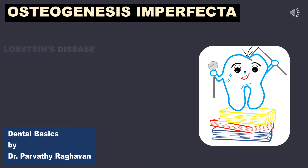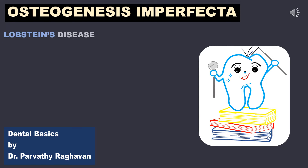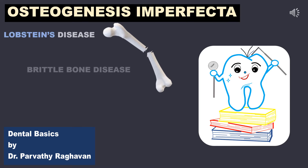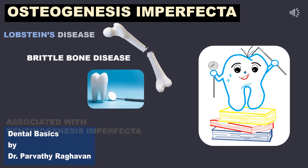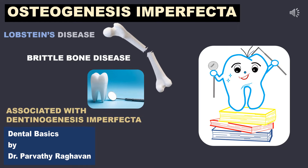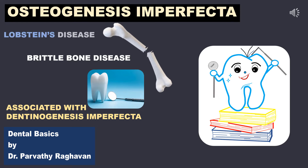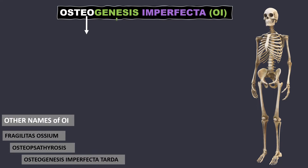Osteogenesis imperfecta is a bone disease, also called Lobstein's disease, named after Lobstein who found the etiology of this condition. The bones are fragile and break easily, so it is commonly known as brittle bone disease. Dentists need to know this since it is associated with dentinogenesis imperfecta, where the dentine formed is of poor quality. Osteogenesis imperfecta translates to imperfect bone formation in the body, leading to extremely fragile bones.